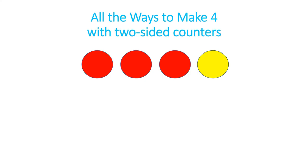If you're using a cup, you're going to flip that cup upside down after you've shaken it a little bit. The four counters are going to land on your table and then you're going to sort them to see how many red counters you got and how many yellow counters you got.